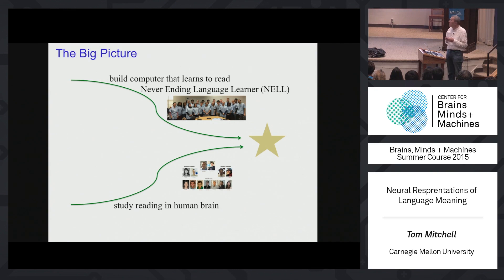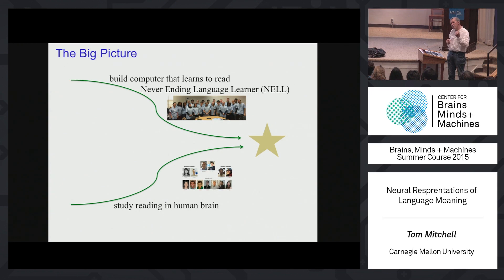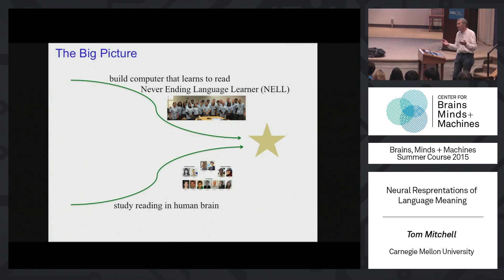NELL is now five years old. It's an effort to try to understand what it would be like to build a computer program that runs forever and gets better every day. Its job is to learn to read the web. It is getting better and currently has about 100 million beliefs that it has read from the web. It's learning to infer new beliefs from old beliefs. It's a better reader today than it was last year, though still not as competent as you and I.